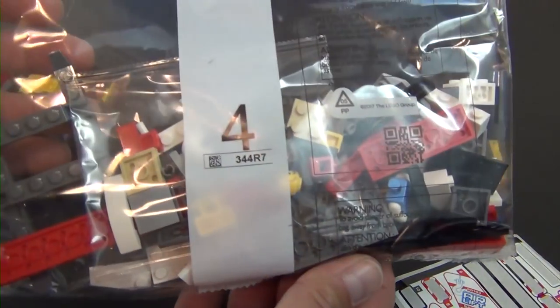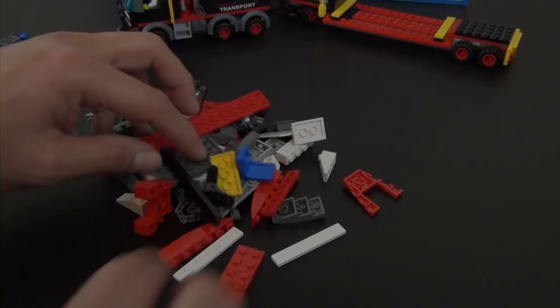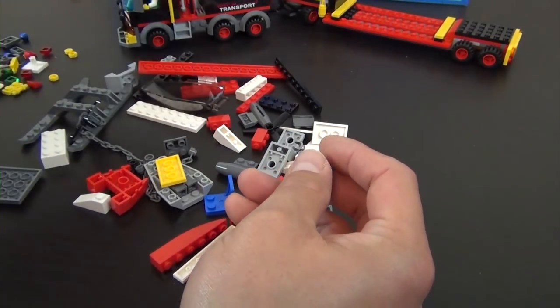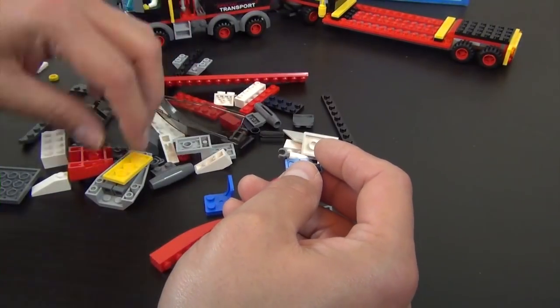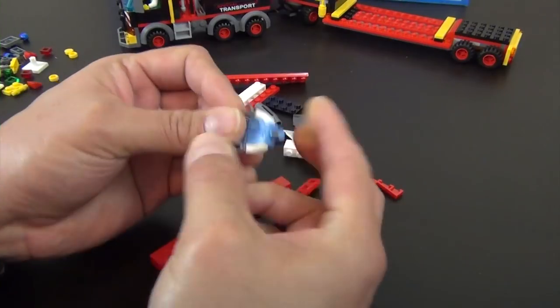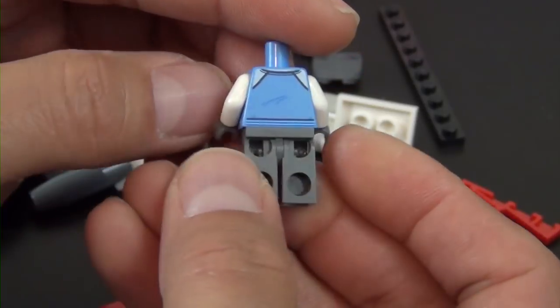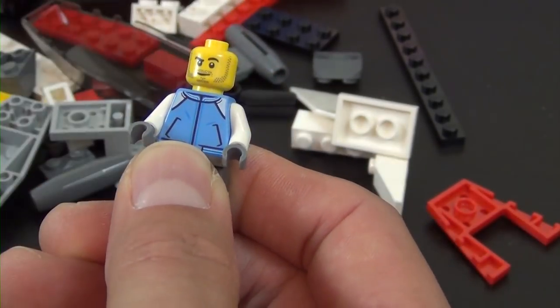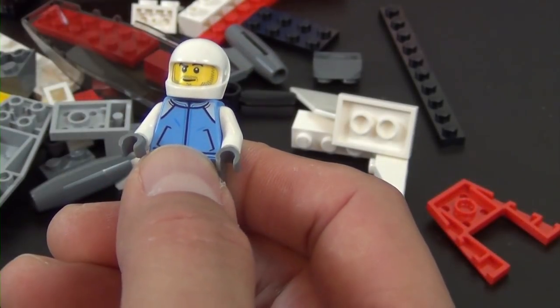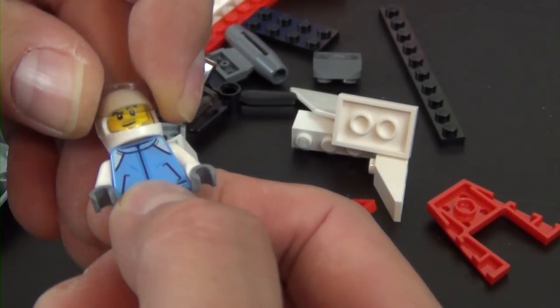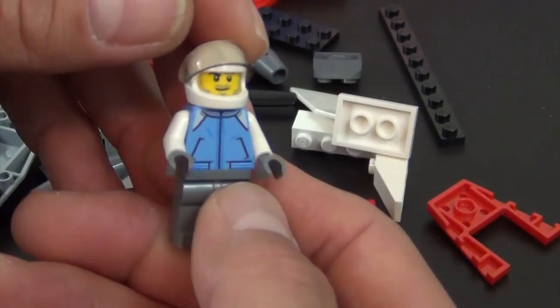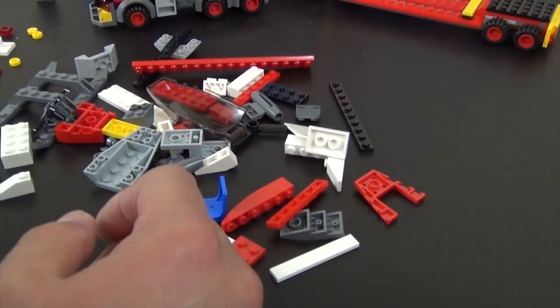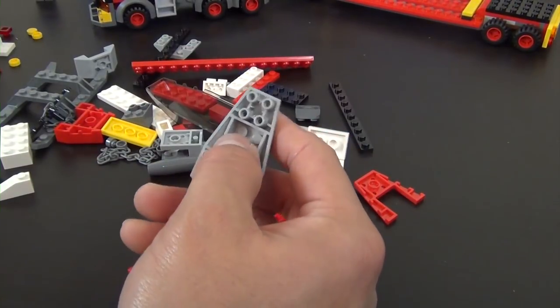Alright so that completes bag three so let's move on to our fourth and final bag of parts right now. Okay we have everything for our last bag out. We do finally have our last minifigure. It's the helicopter pilot and he's got some dark bluish gray pants. He has a jacket on, got some gray gloves. Put the head on, he has the face of concentration. Got a helmet and the windscreen visor type piece. That's our final minifigure, kind of basic. The printed jacket is kind of the only thing that's semi-unique with the minifigure itself.